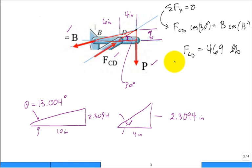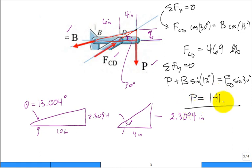Now we can finally solve for P, sum of the forces and the Y equal to zero. So P is down. B times the sine of 13 degrees, that's also downward. And that's equal to the force C to D times the sine of 30 degrees upward. We can now solve for P. 141 pounds.